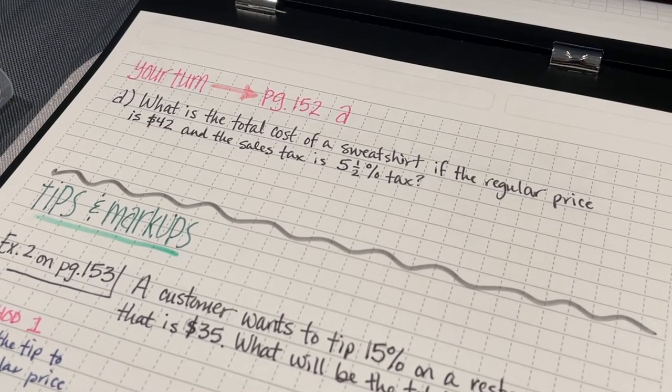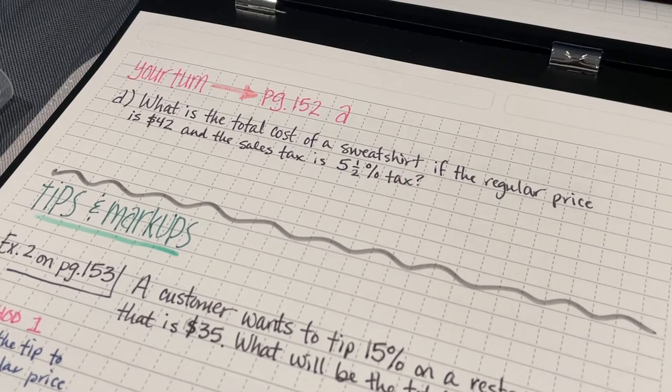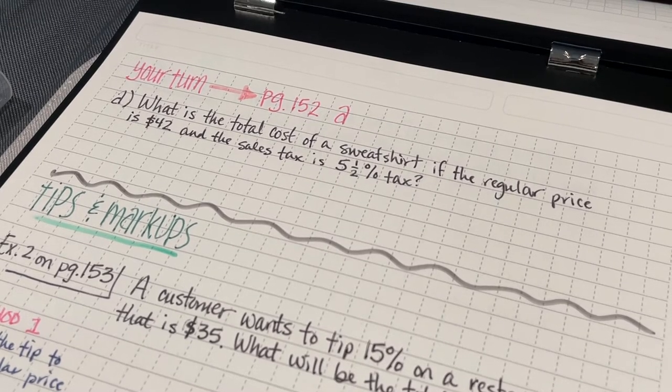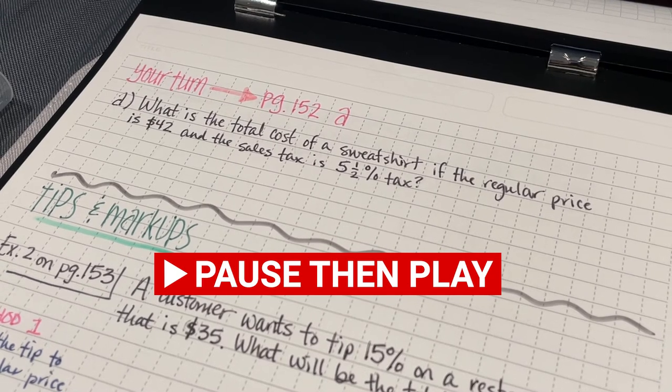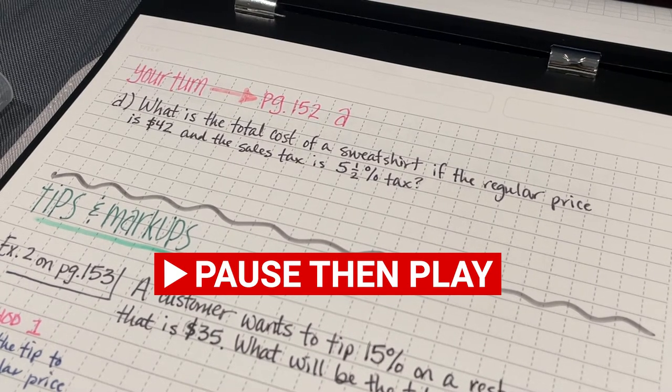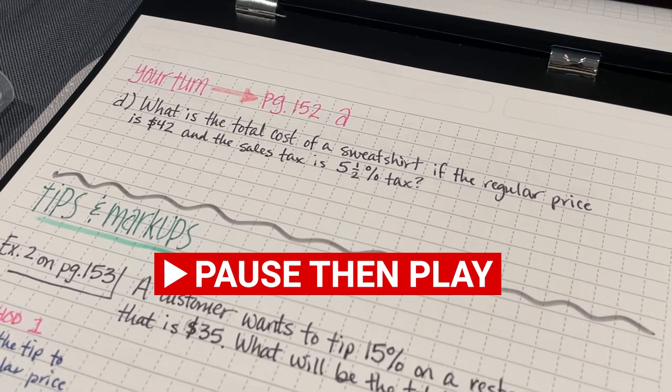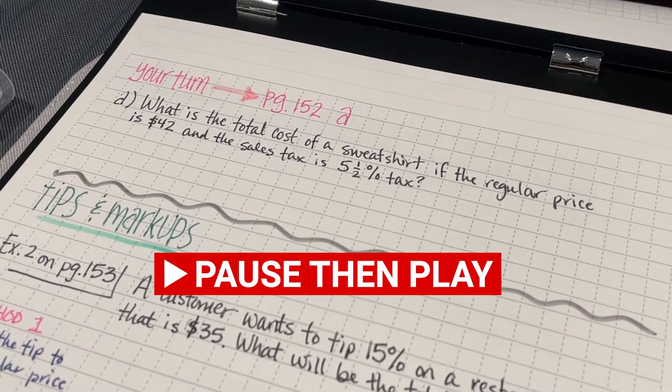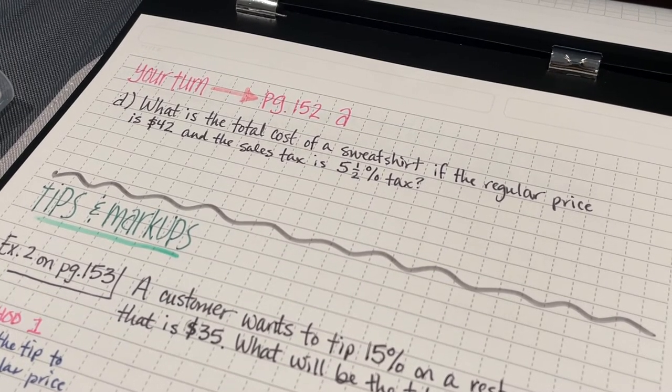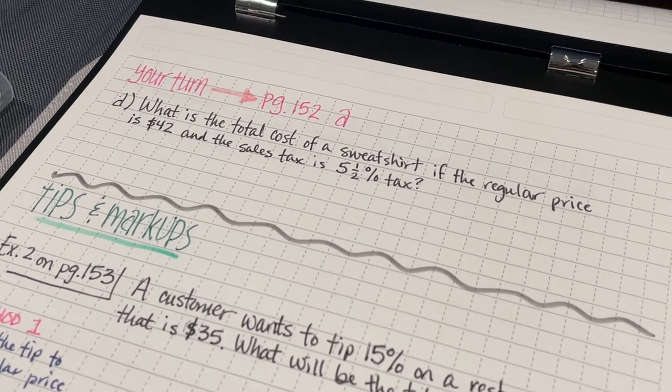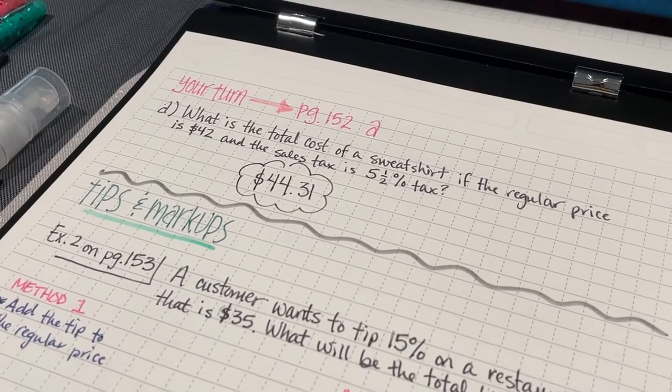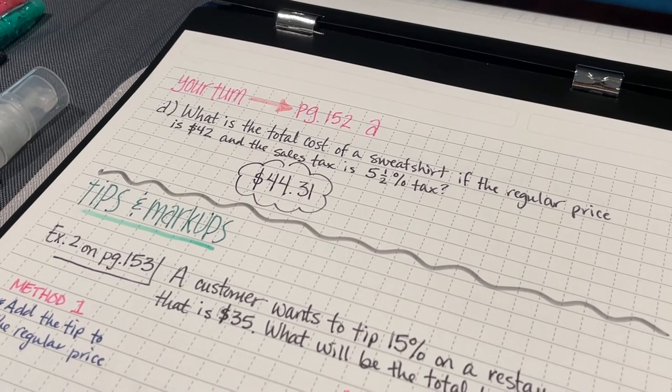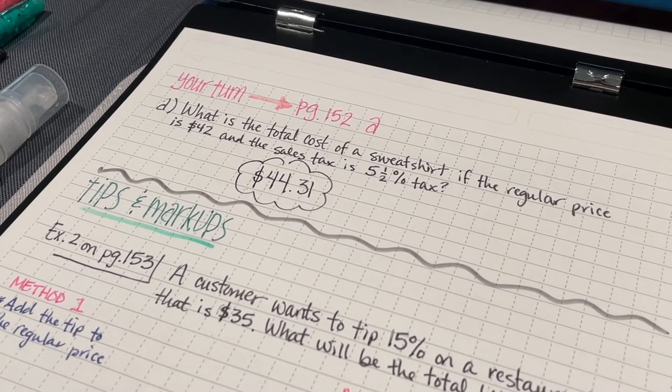Now, I'd like for you to try problem A on page 152. Here's a good time for you to pause the video, take a look at some of the other examples, come up with your solution, and then hit play again so that you can see if you're on the right track. In problem A on page 152, I have a total of $44.31.